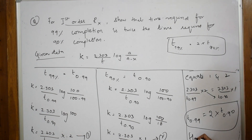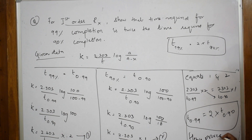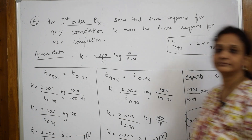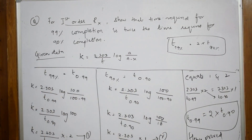So you write: hence proved. t(99%) equals 2 × t(90%). That's it.